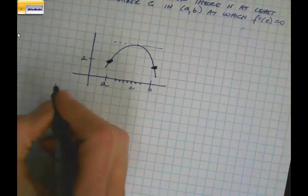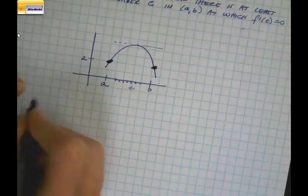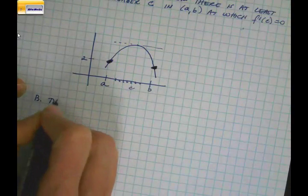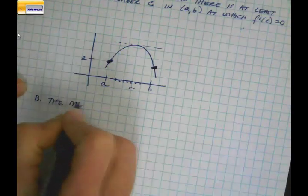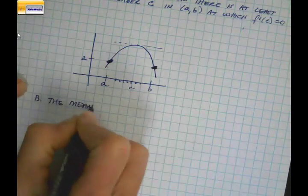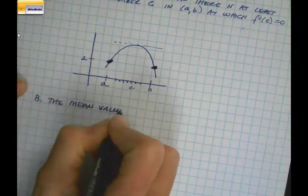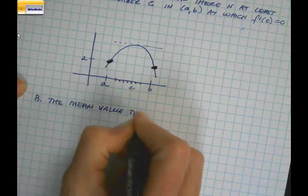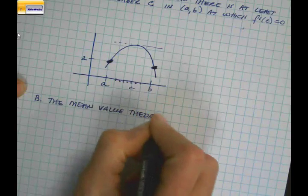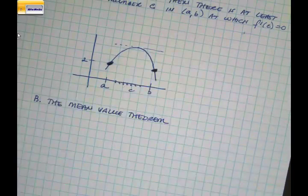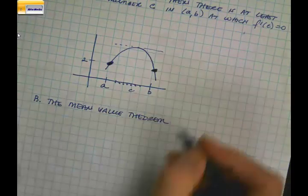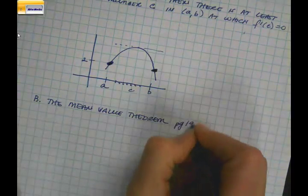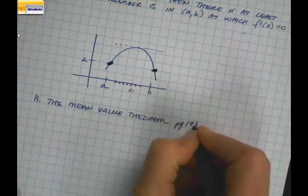Now let's take a look at the Mean Value Theorem. When you think in math about a mean value, what do you think? An average. That's right, an average. So this is going to talk about the average rate of change. This theorem in the textbook is on page 193.